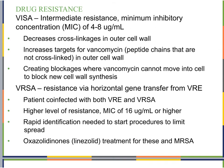For VISA — vancomycin-intermediate Staph aureus — there is an intermediate resistance with a minimum inhibitory concentration (MIC) of 4 to 8 micrograms per milliliter. This reflects the soup of bacteria concept: some susceptible bacteria die right away, while intermediate-resistance ones don't get killed immediately. The mechanism involves decreasing cross-linkages in the cell wall, increasing available targets, and then creating blockages as vancomycin clumps up there.